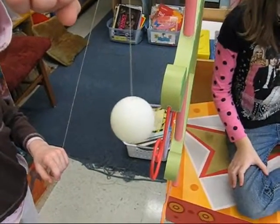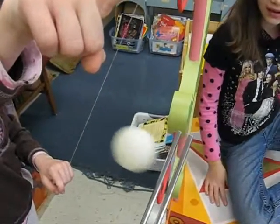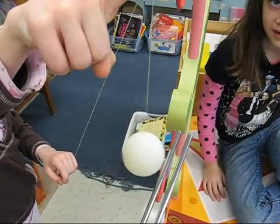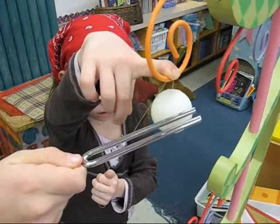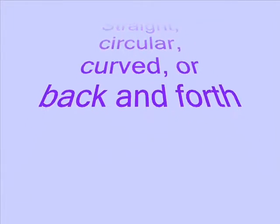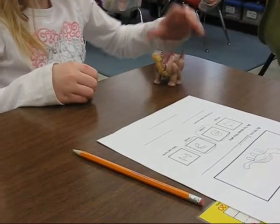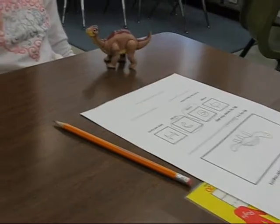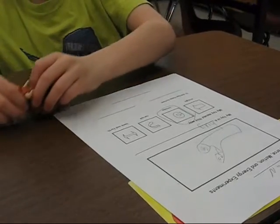It goes back to zoo! My toy can go curved. My toy moves in a circular way.